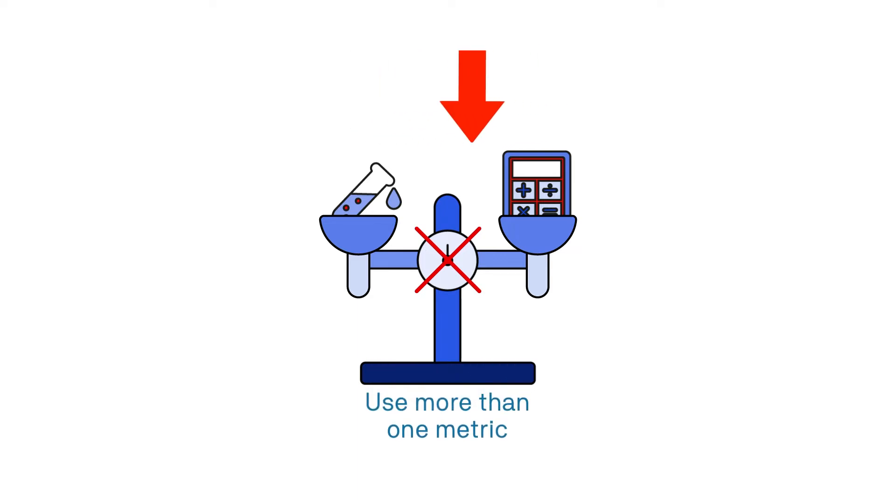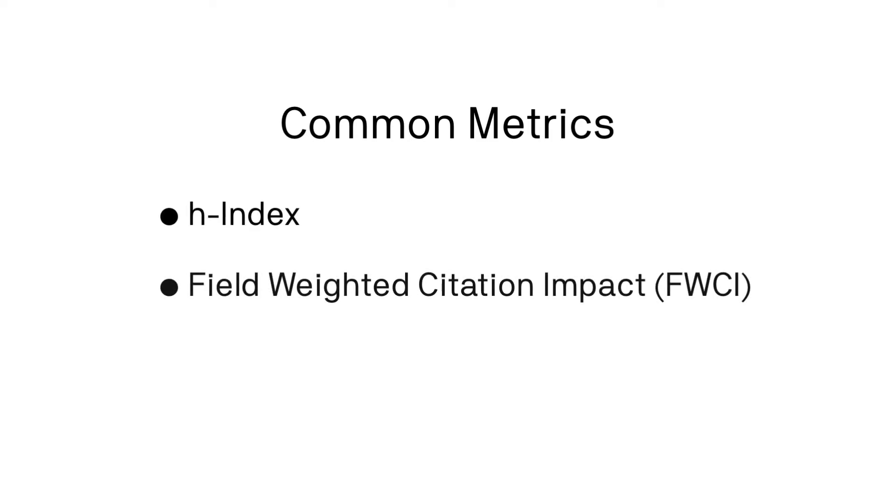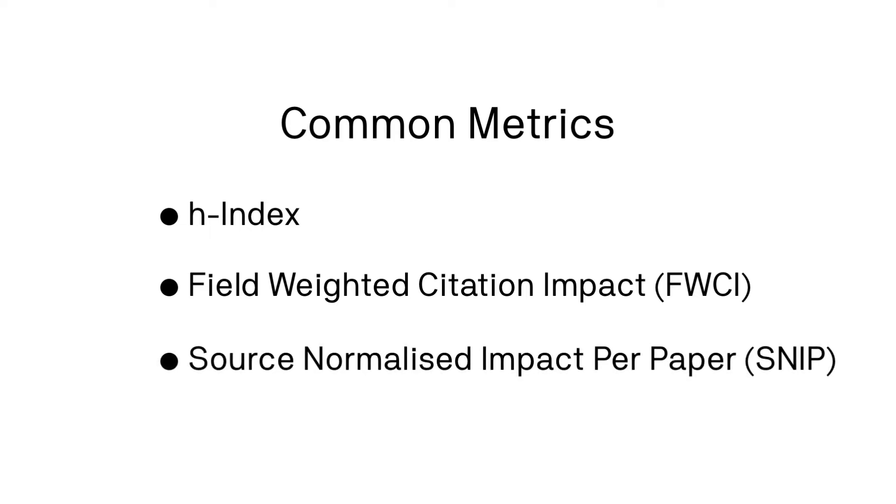Using just one metric often does not provide the full picture of your research publication's performance, so best practice is to use more than one. Three metrics that are commonly used in combination are the H index, field-weighted citation impact, and source-normalised impact per paper. We will unpack these metrics and explain what they mean.